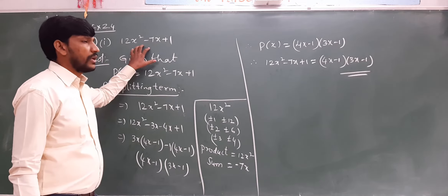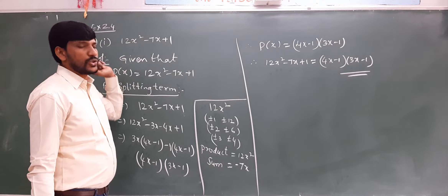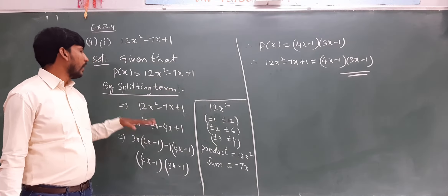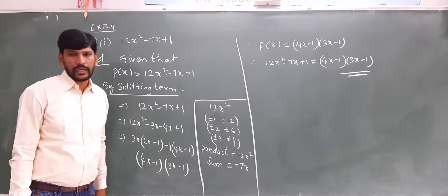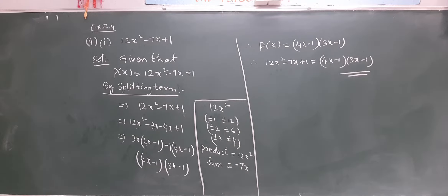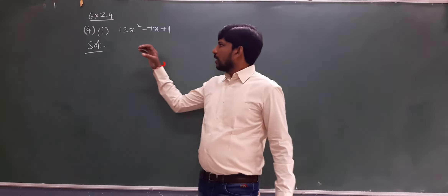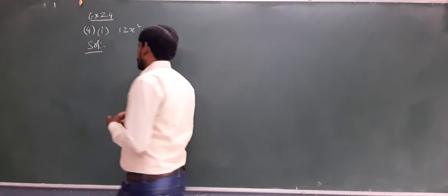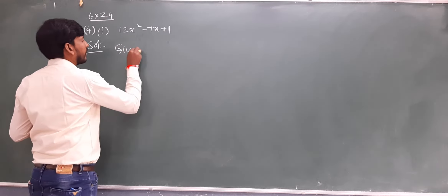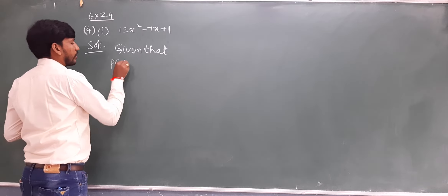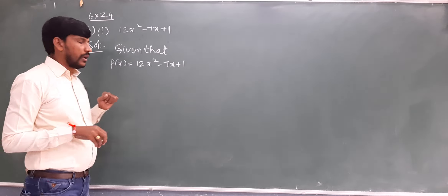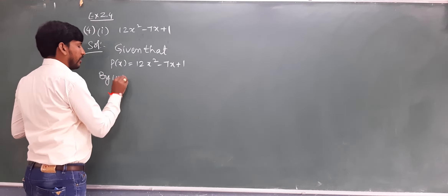Now the same concept we are going to use by factor theorem also. We are going to factorize 12x² minus 7x plus 1 using factor theorem — whether we get the same factors or not, let us try. Given that P(x) is equal to 12x² minus 7x plus 1. We are going to factorize this quadratic polynomial by using factor theorem.